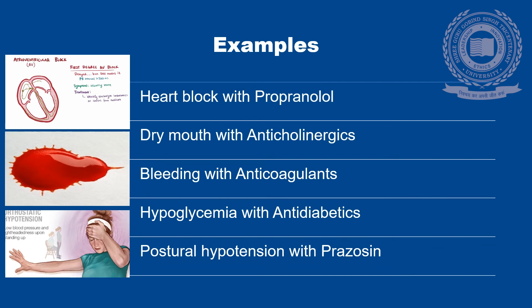The treatment is either to reduce the dose or withhold the drug. A few common examples of Type A ADRs are: heart block with propranolol (a non-specific beta blocker), dry mouth with anticholinergic drugs, bleeding with anticoagulants, hypoglycemia with antidiabetic drugs, and postural hypotension with prazosin, which is an antihypertensive.